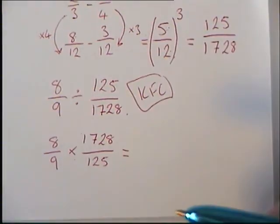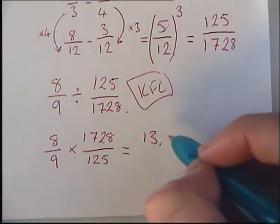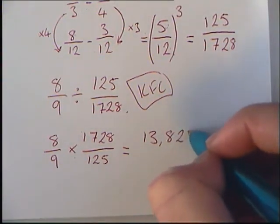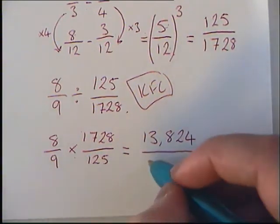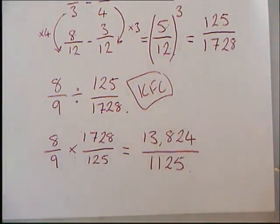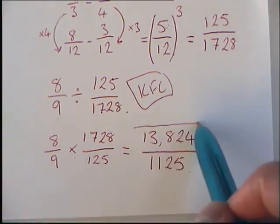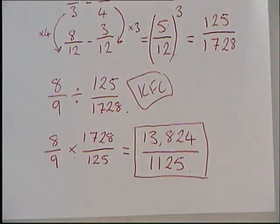8 times 1,728 will give us 13,824, and 9 times 125 is 1,125. Again we're not going to simplify it down because those are incredibly large numbers, so we're just going to leave it like that. If you got that, very well done.